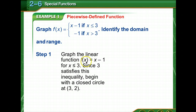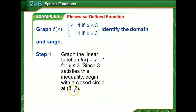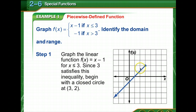We're told to graph the linear function f of x equals x minus 1 for x less than or equal to 3. So substitute a 3 in for x: 3 minus 1 is 2. Our ordered pair is going to be (3, 2). Since this inequality contains 'or equal to,' it's going to be a closed circle. We can pick other points — if you put a 1 in there, 1 minus 1 is 0, so we'd graph (1, 0).